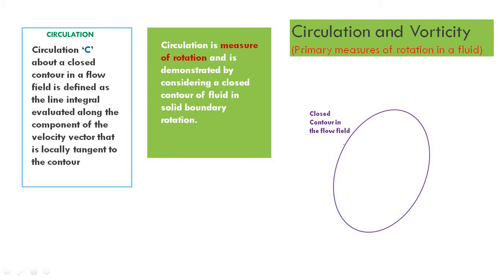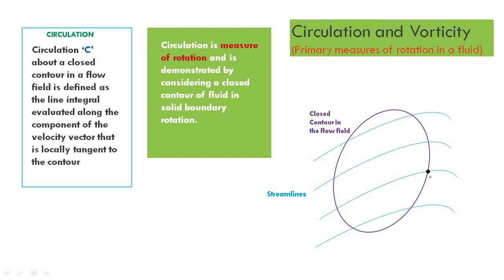The contour may be of any shape — circular or any arbitrary shape. The flow field consists of several streamlines representing the pattern of flow. On each streamline, a fluid particle has a velocity vector directed along the tangent to the streamline at that point. If we consider a particle at a particular position, its velocity u is along the tangent to the streamline at that point.